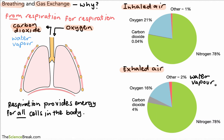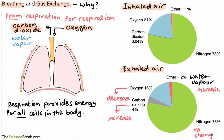To summarize the gas changes: oxygen decreases in exhaled air compared to inhaled air; carbon dioxide increases; water vapor increases a little bit as well; and nitrogen gas stays about the same — there's no change in nitrogen gas. This is mainly because nitrogen is neither used by the body nor produced by the body.